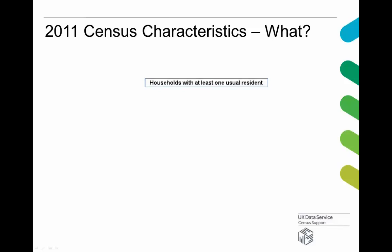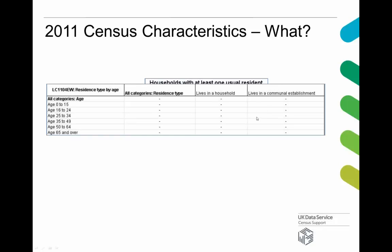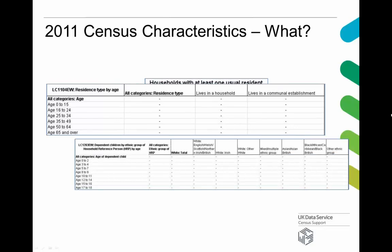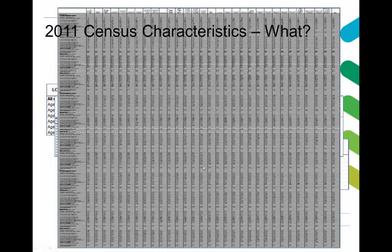Census data is specified and produced traditionally as sets of tables. These tables range from very simple ones — like a single variable such as households with at least one usual resident — to tables that are cross-tabulated with more than one variable. Each cell contains a particular combination of categories, and some of the big ones contain several thousand different cells of information. The data produced by the census agencies comes in multiple different packets associated with particular sets of geographies for each of these tables.